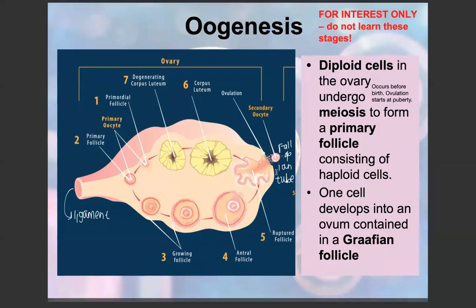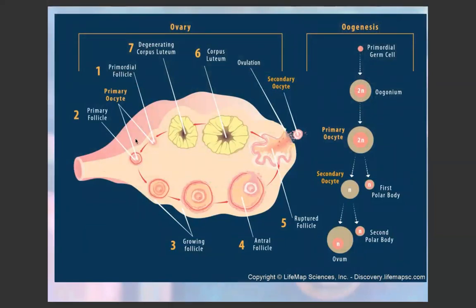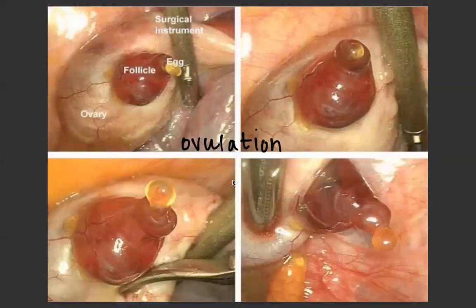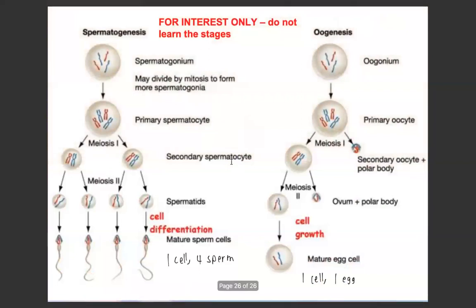I'll do a separate video on the menstrual cycle where we'll talk about ovulation in more detail. In oogenesis, we start with a primary follicle, it grows, eventually becoming an ovum contained inside the Graafian follicle, which is then released during ovulation into the fallopian tube, leaving the corpus luteum behind. To contrast spermatogenesis and oogenesis: the most important point is that one spermatogonium produces four sperm cells, whereas one oogonium only produces one mature egg cell. The other cells become a secondary oocyte and polar bodies, and in the end we only have one mature egg cell.